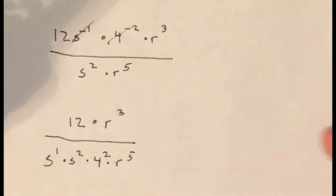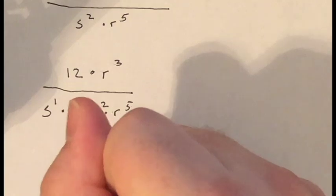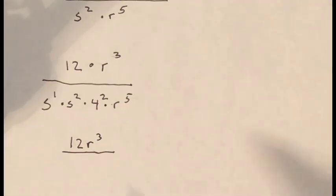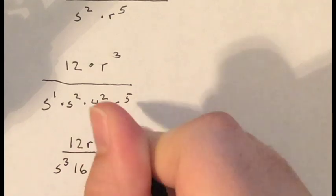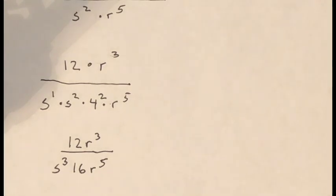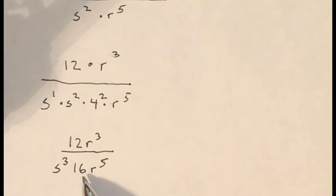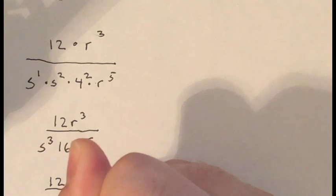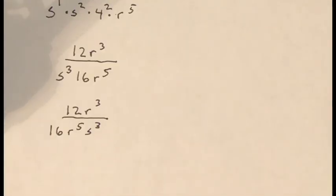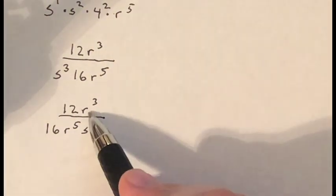Now I simplify. The numerator is 12r to the third. In the denominator, s to the first times s squared gives s to the third, and four squared is 16, with r to the fifth. So I have 12r to the third over 16 s to the third r to the fifth. I'll rearrange to put 12 and 16 together for easier simplification.